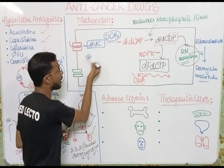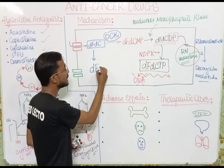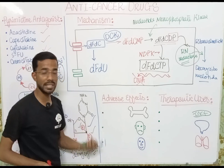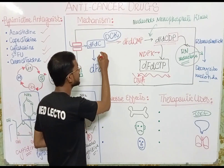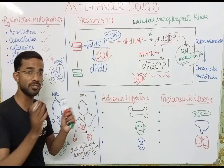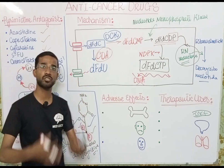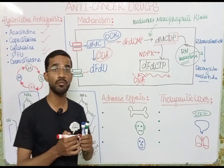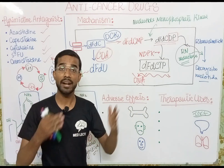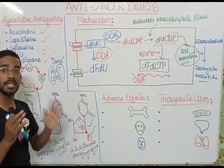The compound can also convert into difluorodeoxyuridine with the help of the enzyme cytidine deaminase. This compound ultimately goes into the blood and is excreted from the body, because the blood goes to the kidney where filtration of different drugs occurs and drugs are excreted. This is the mechanism of gemcitabine.